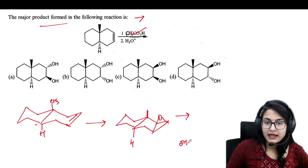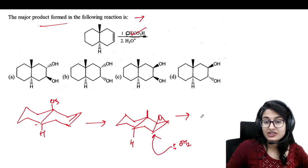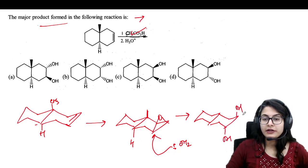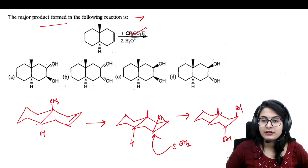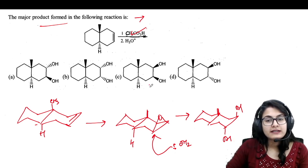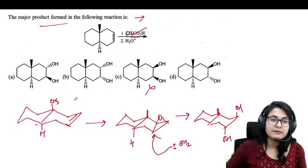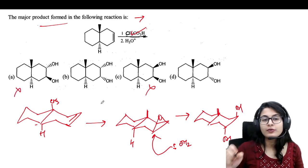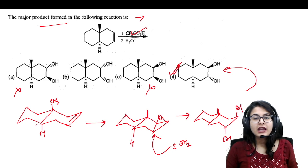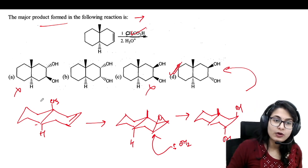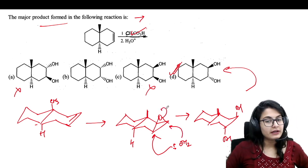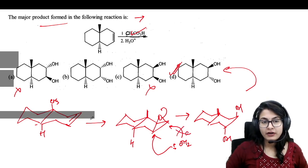There is one double bond. Let's say epoxidation takes place above the plane; then water attacks anti to give a 1,2-diol. The stereochemistry question is: which options match the diaxial product? Option A is wrong because it doesn't give diaxial. Option C is wrong for the same reason. Only option D gives the diaxial product — when water attacks from the correct side, D is formed and is the correct answer.